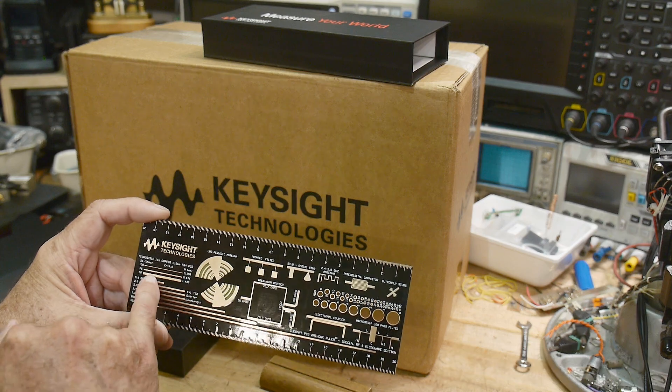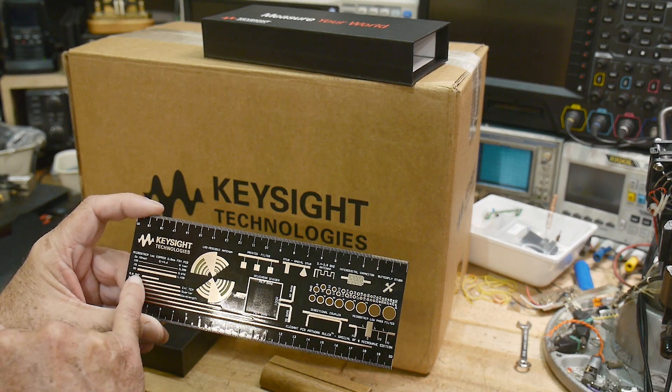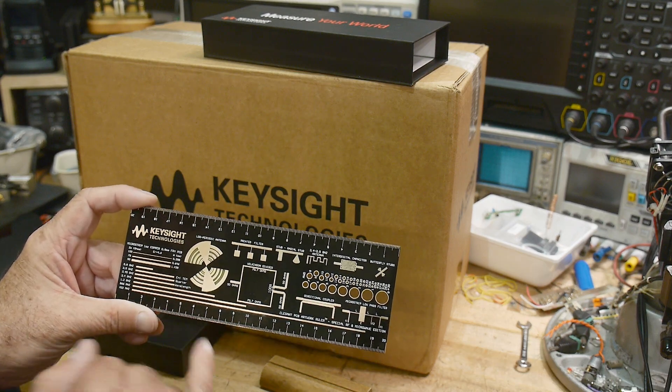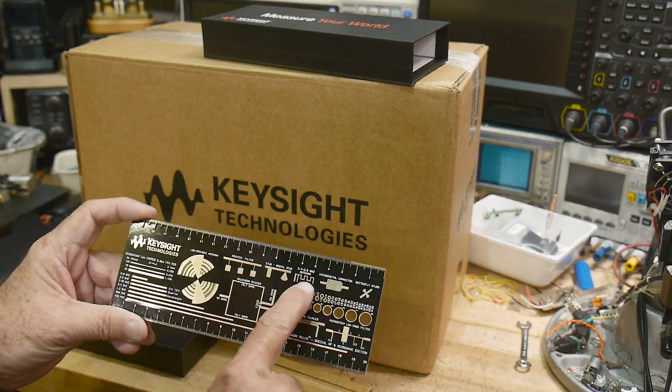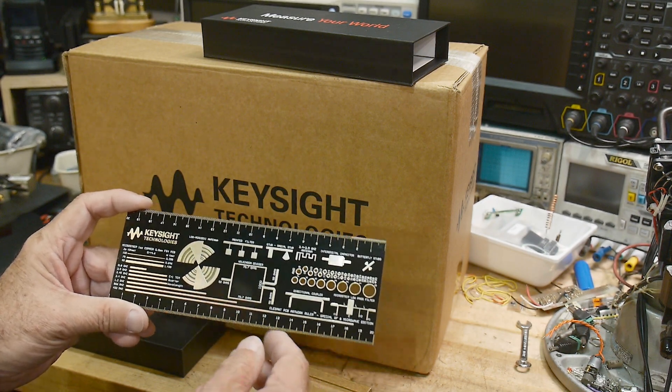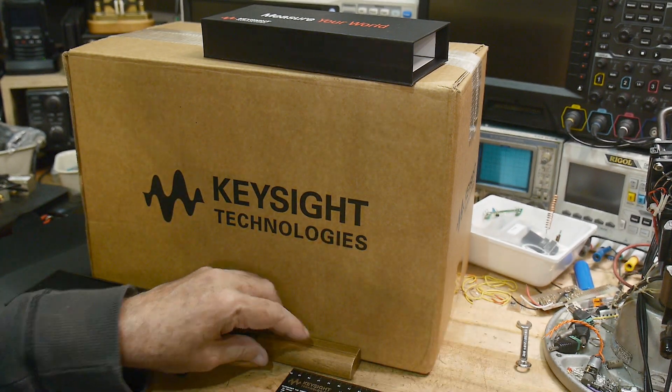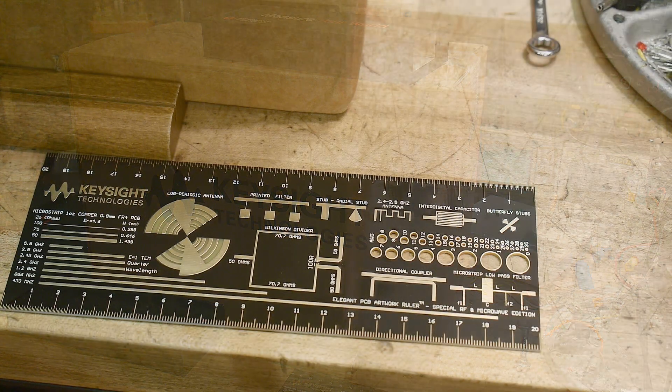Different lengths of quarter wavelengths of different gigahertz's. That's kind of a handy thing to have. Different filters you might see in boards and stuff. Let me put this down and give you a better view of it. There you go.